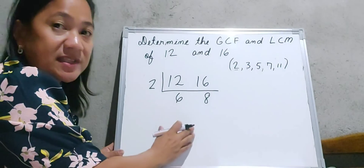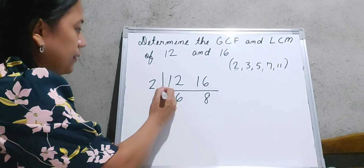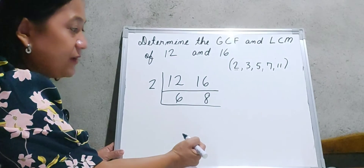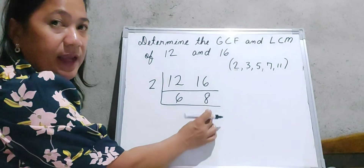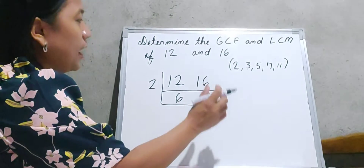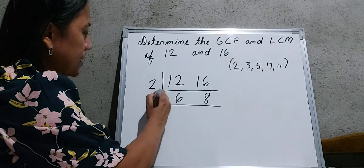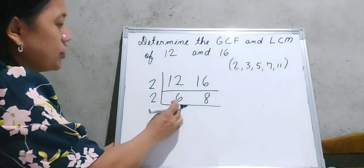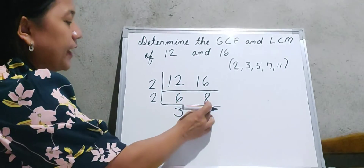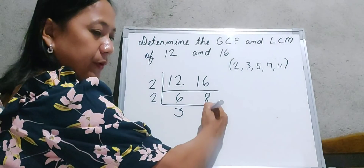We will not stop here because 6 and 8 are still composite numbers. We find again the prime number divisible by both 6 and 8. Since they are both even numbers, we use the prime number 2 again as our divisor. 6 divided by 2 is equal to 3 and 8 divided by 2 is equal to 4.